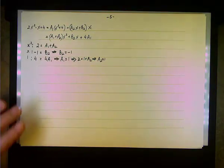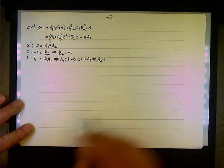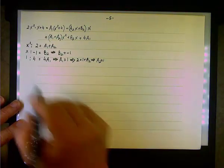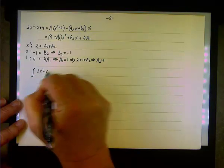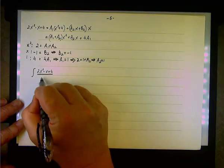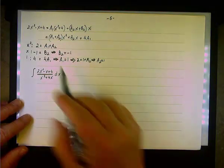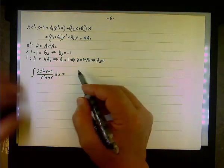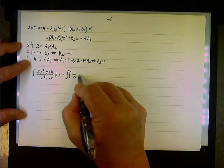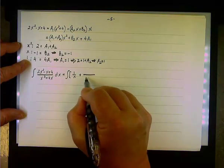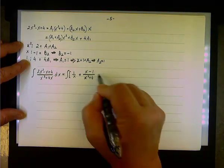We solve the coefficients quickly: A1 = 1, A2 = 1, B2 = −1. So we can now write the integral. The decomposition was A1/x, so we have the integral of 1/x, and the other part was (x − 1)/(x² + 4).